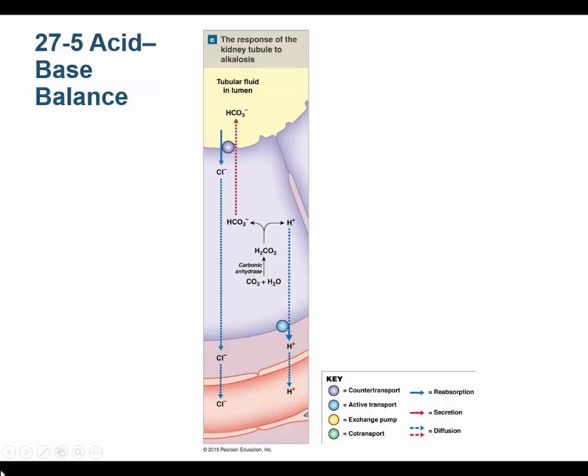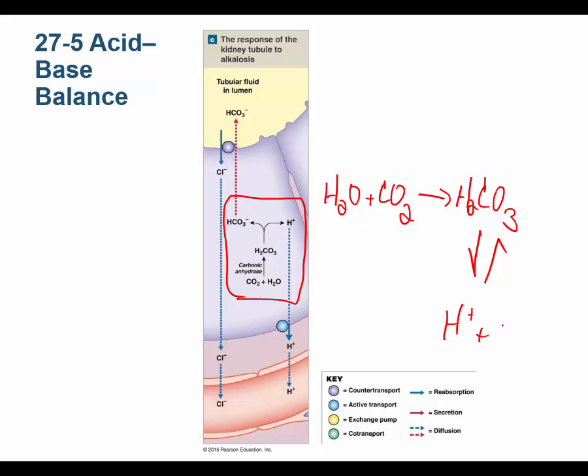This is just showing the bicarb system again. This carbonic anhydrase reaction is super important to memorize and understand — you had to do it for Bio 203 anyway. It's also how your stomach makes hydrochloric acid. The carbonic anhydrase reaction makes carbonic acid and is completely reversible — that's the important thing. Le Chatelier's principle is in effect.